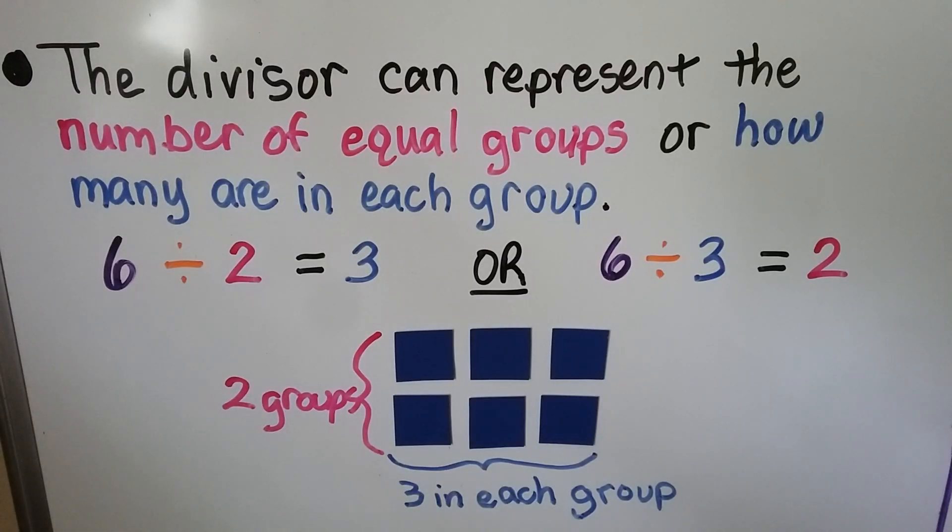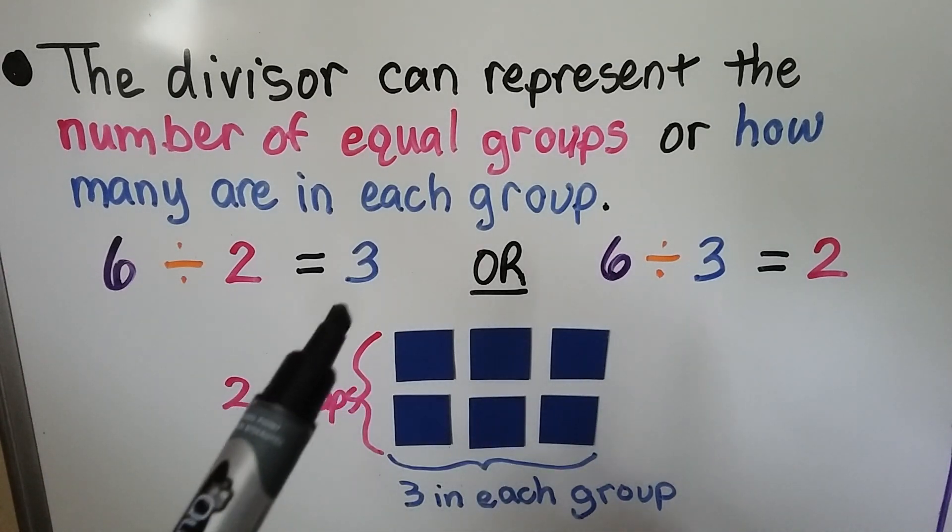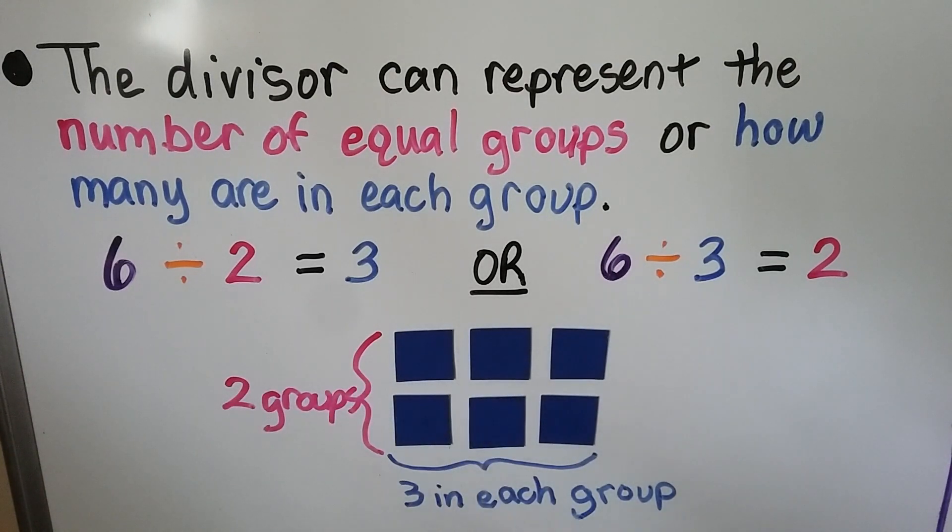The divisor can represent the number of equal groups or how many in each group. We have 6 divided by 2. We have 2 equal groups. Our quotient is 3. There's 3 in each group.